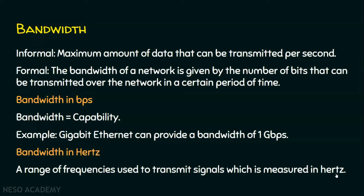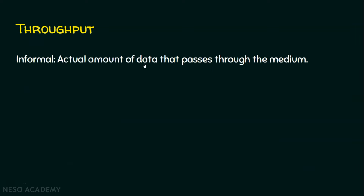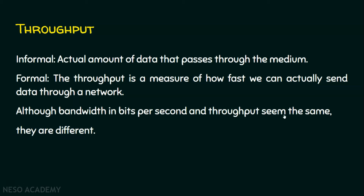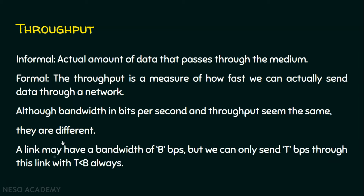Now let's move on to throughput. Informally, throughput is the actual amount of data that passes through the medium. Formally, throughput is a measure of how fast we can actually send data through a network. The word 'actual' indicates this is the reality — bandwidth is the capability, throughput is the reality. Although bandwidth in bits per second and throughput seem the same, they are actually different. A link may have a bandwidth of B bps, but we can only send T bps through this link, where T is always less than B, because bandwidth is capability and throughput is reality.